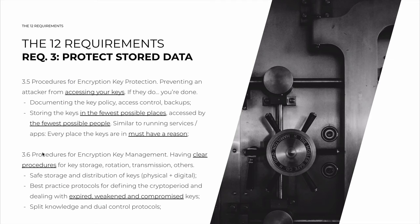3.6 is about having procedures for encryption key management — key storage, rotation, transmission, and others. If the previous point was about protecting the keys, this point is about managing them. First, safe storage and distribution of all keys, both physical and digital. You should have best practice protocols for defining the crypto period and for how to deal with expired keys, weakened keys, or compromised keys, because any and all of these may trigger replacement protocols. You can also have split knowledge and dual control protocols to minimize damage in case one person is compromised, so you always need two different people.